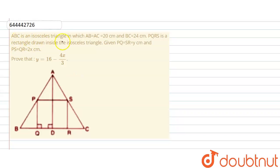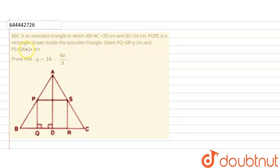The question says ABC is an isosceles triangle in which AB equals AC equals 20 cm and BC equals 24 cm. PQRS is a rectangle drawn inside the isosceles triangle, given PQ equals SR equals Y and PS equals QR equals 2X.